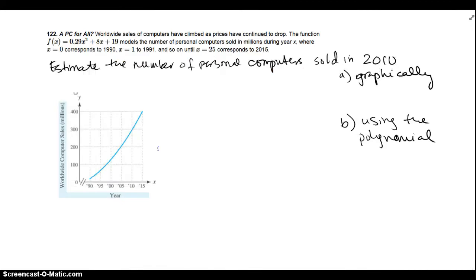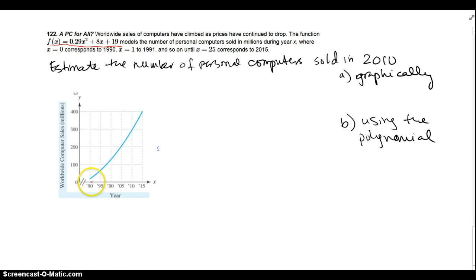This problem says worldwide sales of computers have climbed as prices have dropped. The function f(x) models the number of personal computers sold in millions during year x, where x equals 0 corresponds to 1990. So 1991 would be x equals 1, all the way until x equals 25, which corresponds to the year 2015.